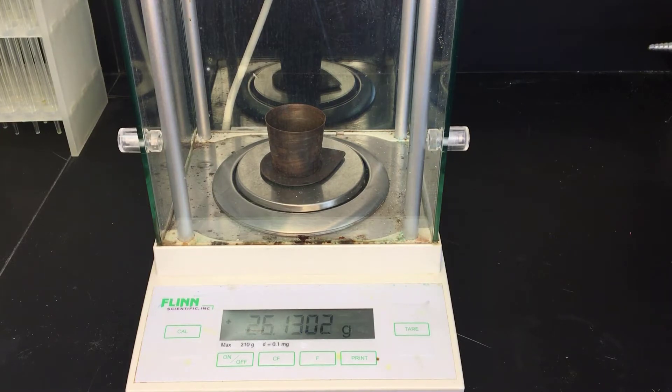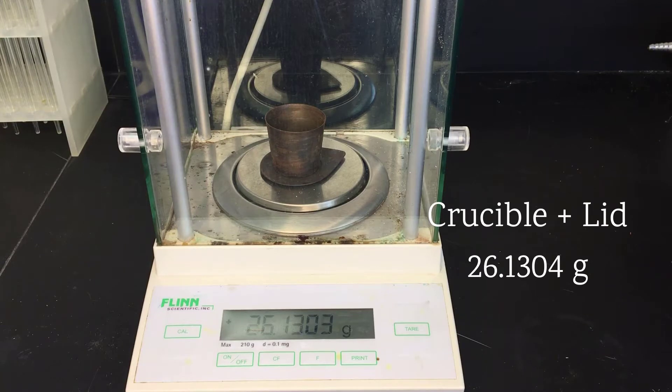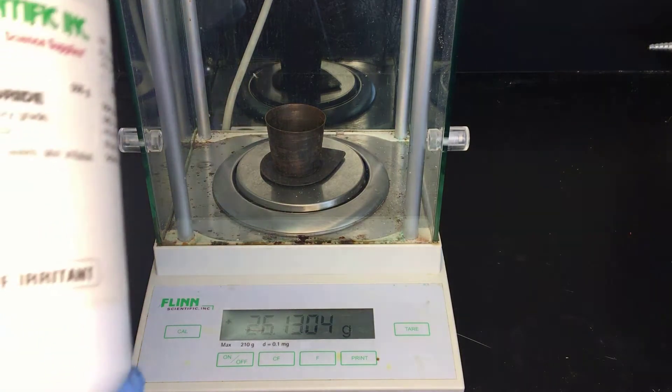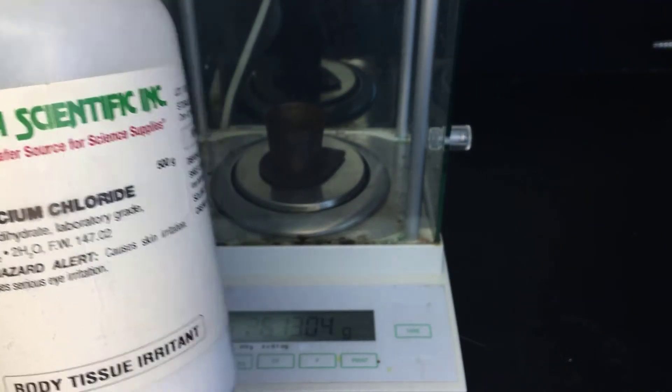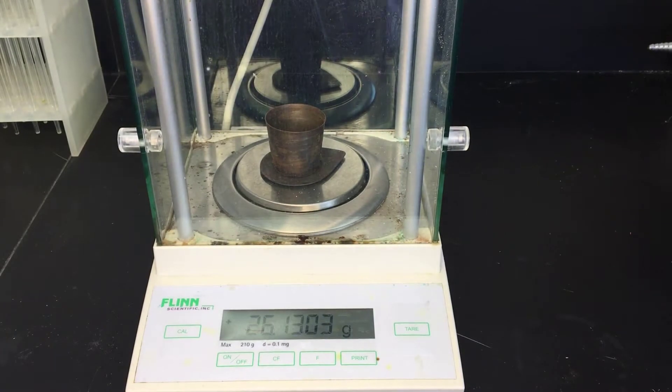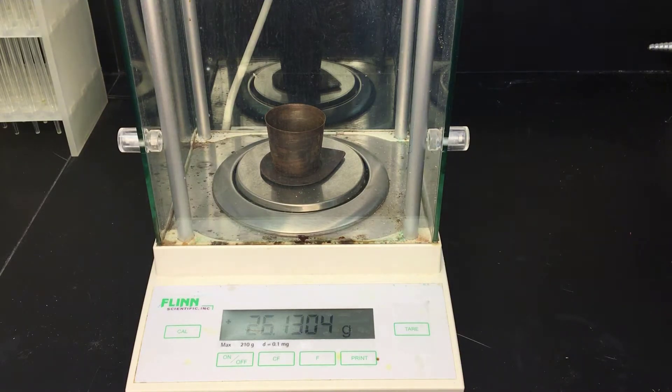Rather than using weighing paper or a weighing tray, where some of the material could get stuck to it, we're going to use the crucible as our container. We're going to add between one and a half and five grams of salt. I'm going to aim for about three grams each time. Occasionally, I'll exceed that. And ideally, we would do three trials with each.